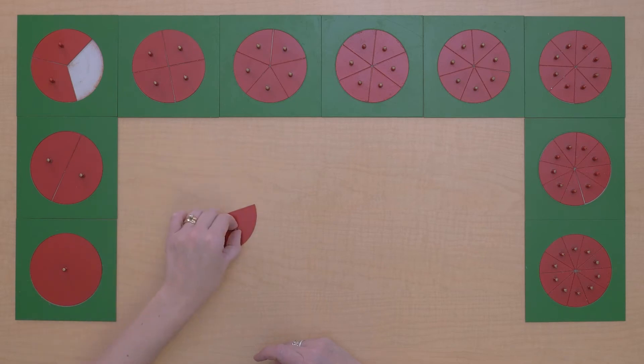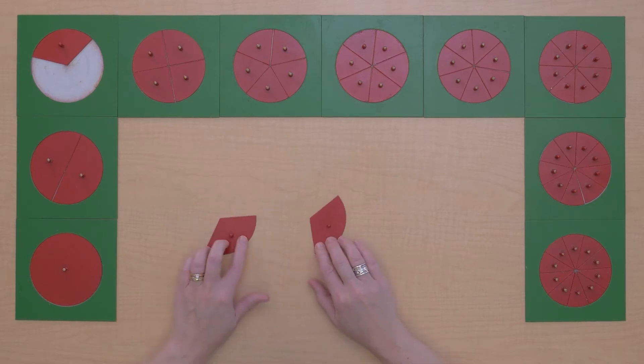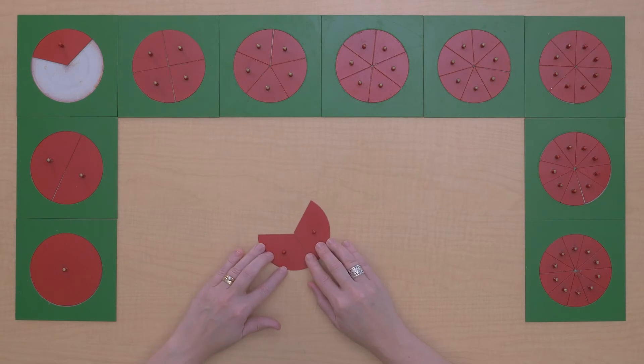Today we are going to do some multiplication with fractions. So I want to multiply 1/3 times 2. Here's 1/3 one time, 1/3 two times. When we do multiplication, what do we do to find the answer? We're going to put it all together. So 1/3 times 2 equals 2/3.